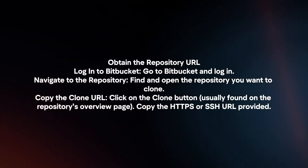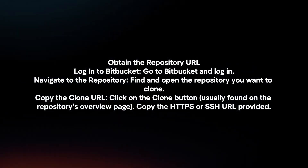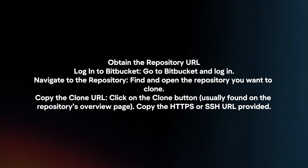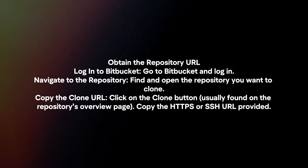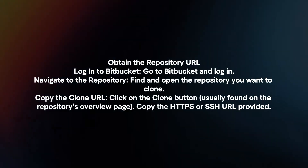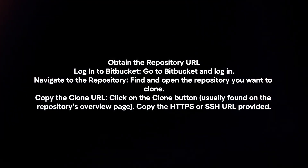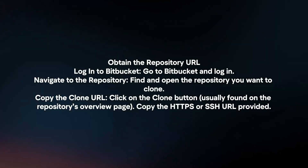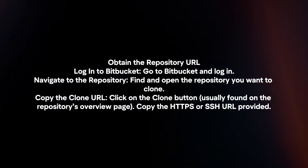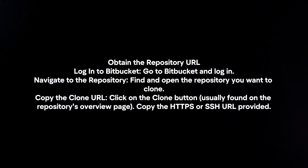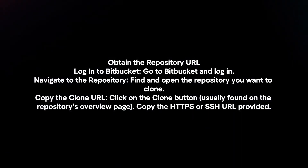First, obtain the repository URL. Log in to Bitbucket and navigate to the repository you want to clone. Find and open it, then click on the clone button and copy the HTTPS or SSH URL provided.